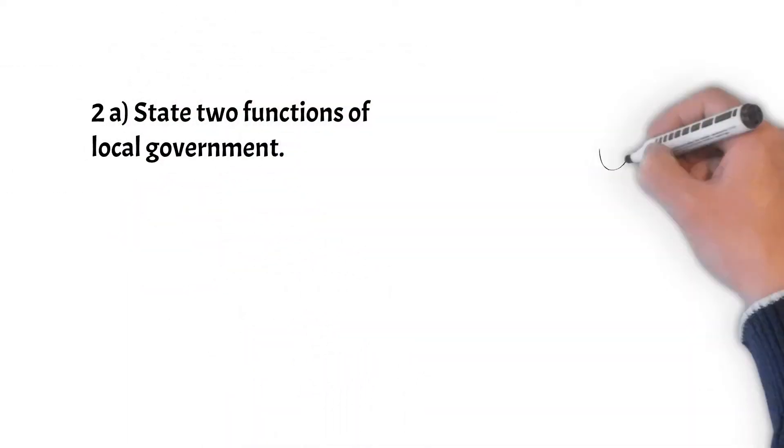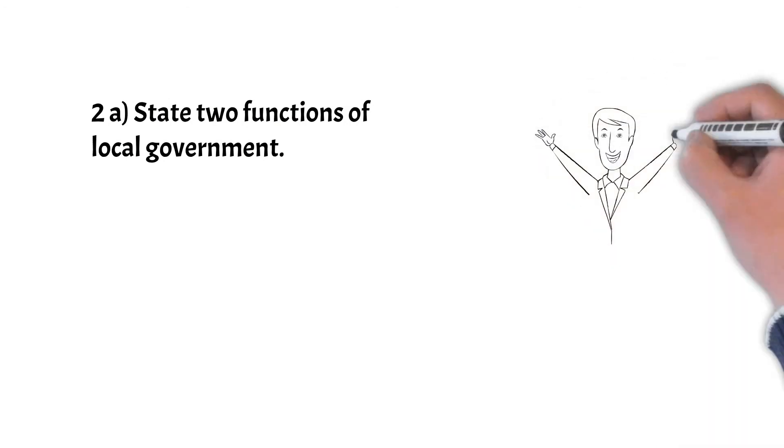Let's start question 2a: state two functions of local government. I can state a lot more than just two, but from this list all you have to do is choose two. Providing public goods, providing street lights, local recreation activities, waste collection and management, infrastructure investment, providing tax incentives, owning provision of low-income housing, supporting local businesses.